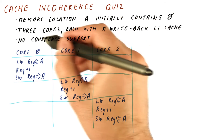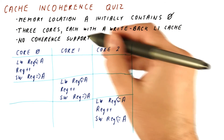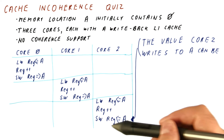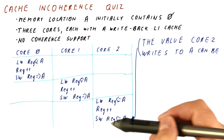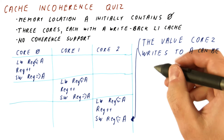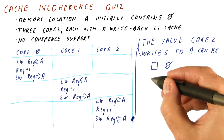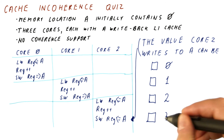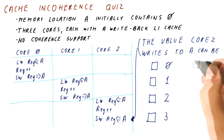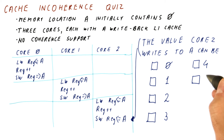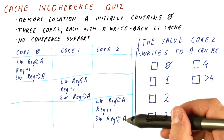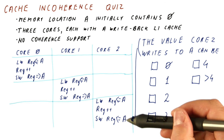But with the three L1 caches and no coherence support, the question is: what value can core two be writing to A? Can it be zero? Can it be one? Can it be two? Can it be three? Can it be four? Can it be something larger than four? Put a check next to all of the answers that might be true.